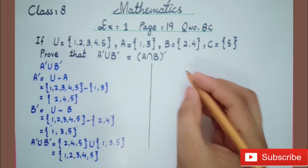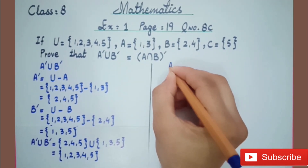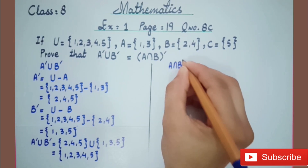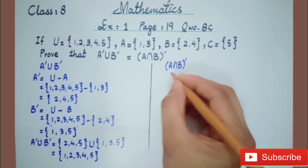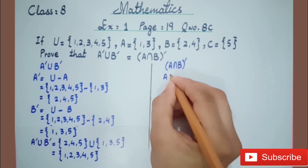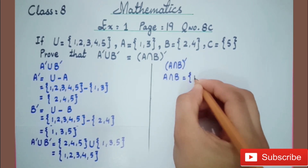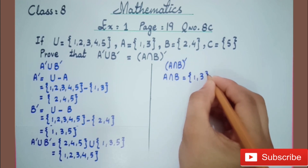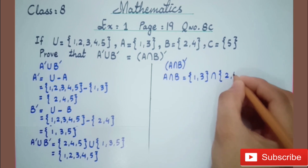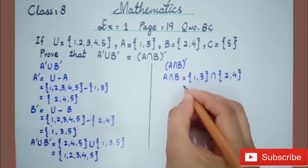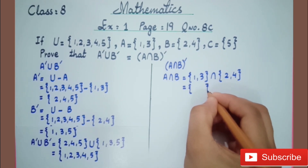Now we will solve the right-hand side, which is A intersection B, whole complement. First we find A intersection B. A intersection B equals set A {1, 3} intersection set B {2, 4}. The answer is the empty set, because there is no common element.